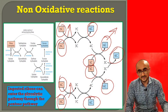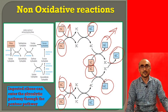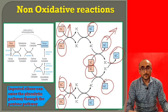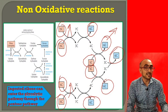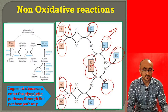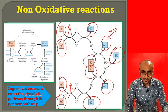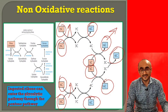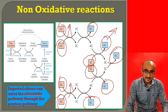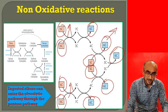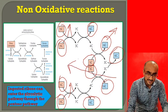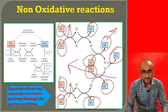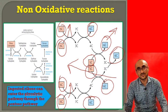These non-oxidative phase reactions are reversible and depend on the relative concentrations of their products. If hexose sugars like glucose-6-phosphate are present in high concentration in the cell, these reactions are reversed, giving rise to pentose sugars that can be used for biosynthetic reactions.